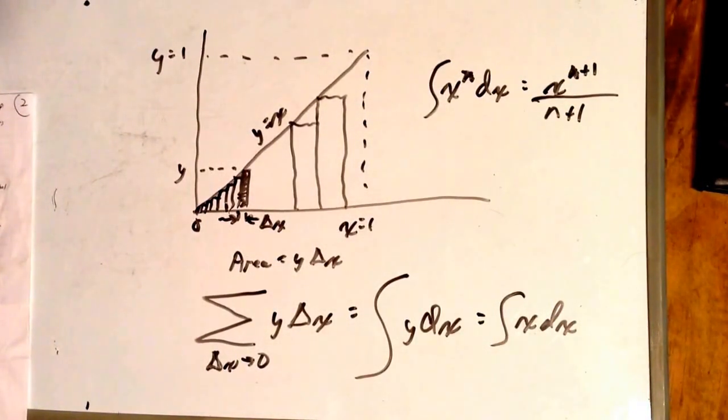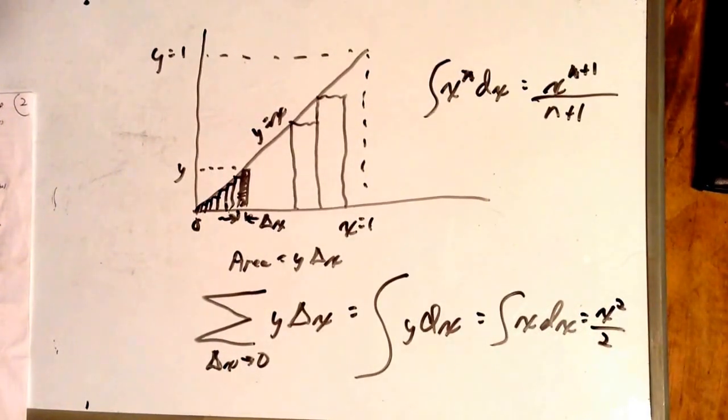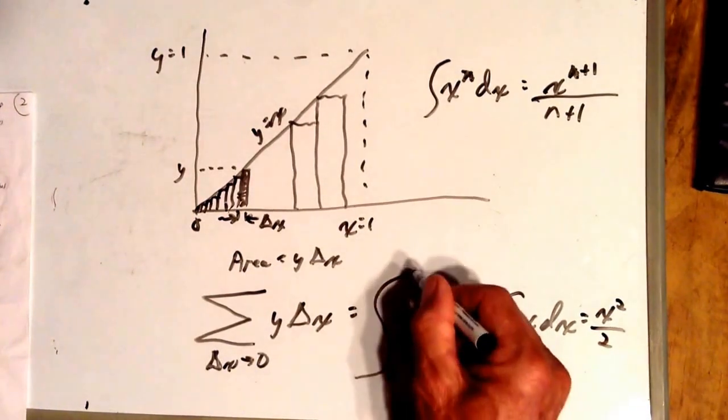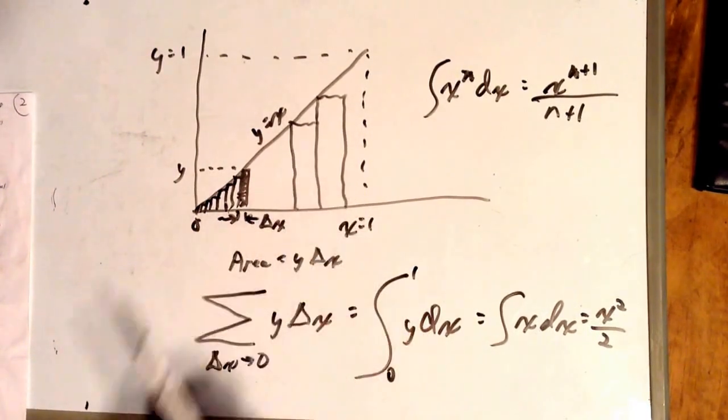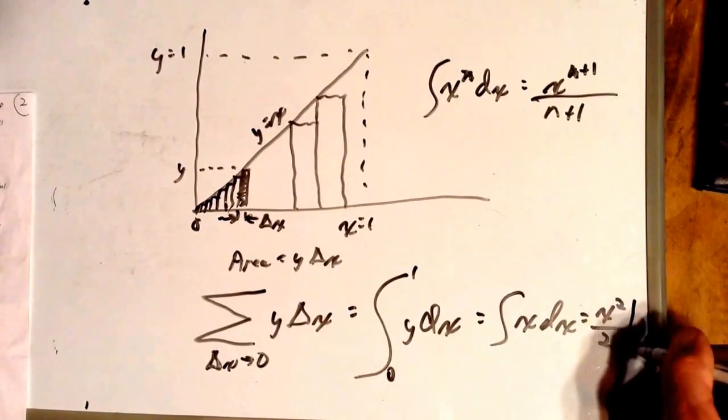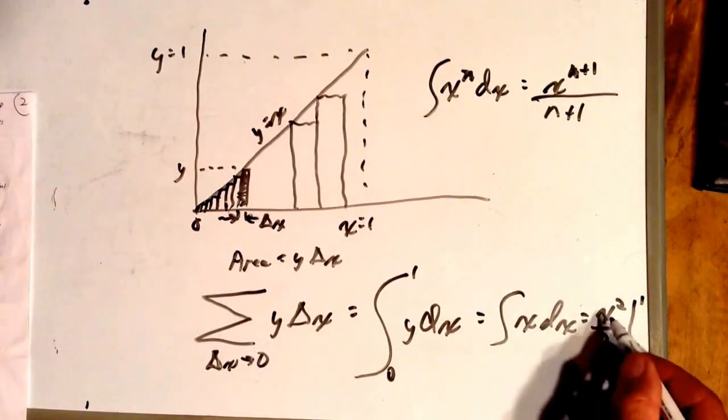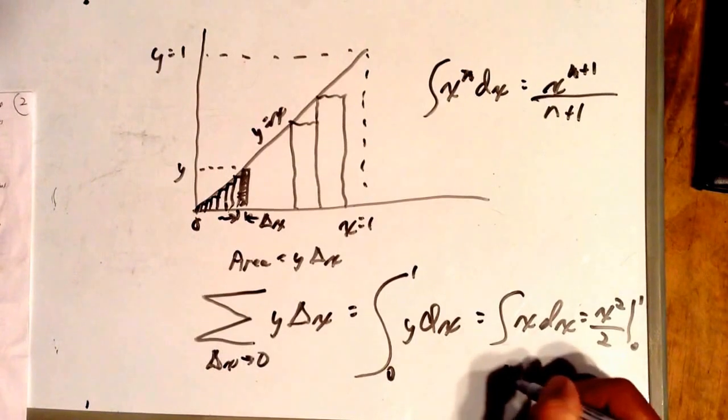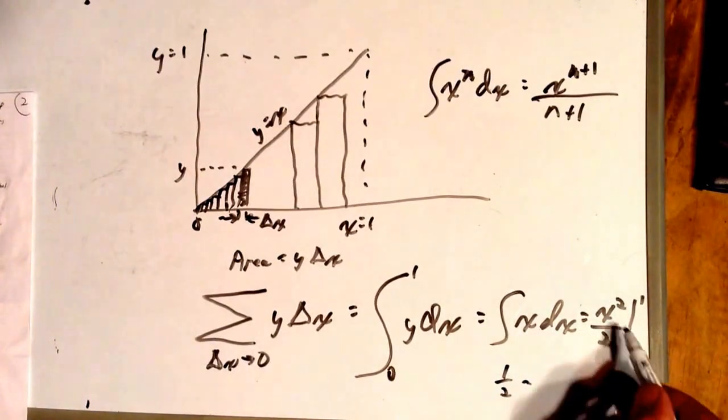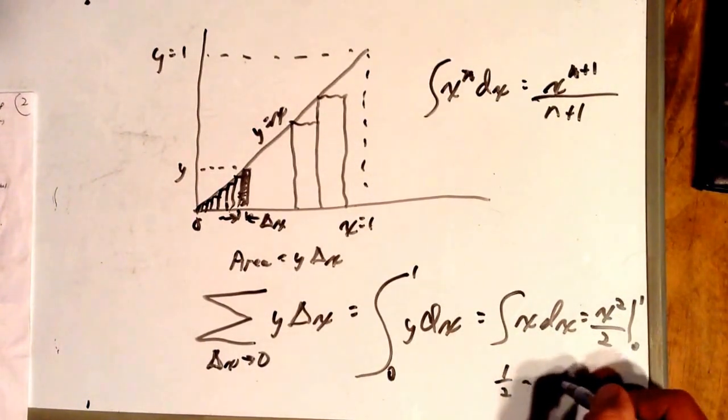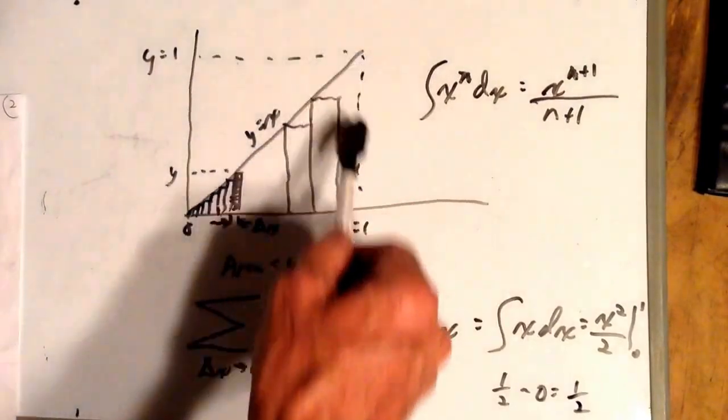So the integral of x dx is equal to x squared over two. And if we let zero and one be our limits of integration, because we're integrating from x equals zero to x equals one, we plug in one into the x spot and we have one squared over two, which is one half. And then we subtract zero squared over two. Minus zero equals one half, just like we figured at the beginning. The area of this triangle is one half.